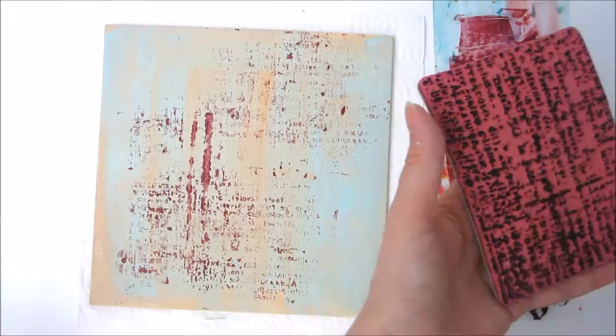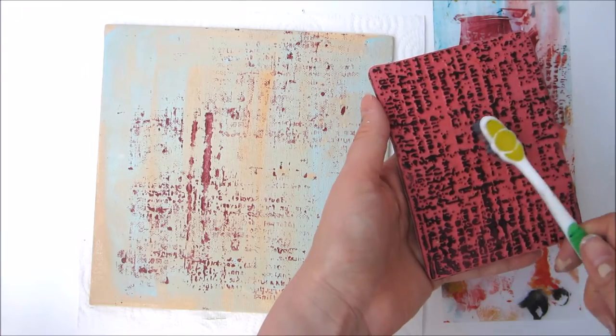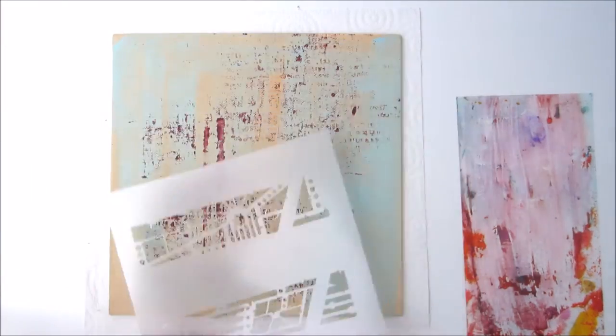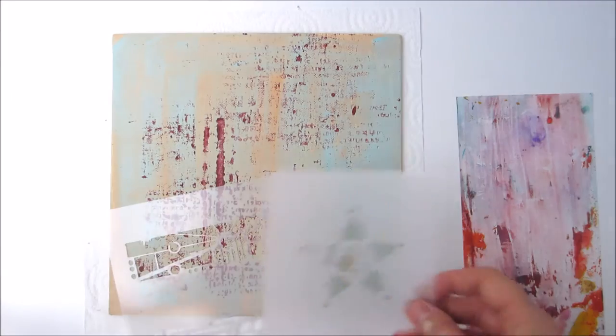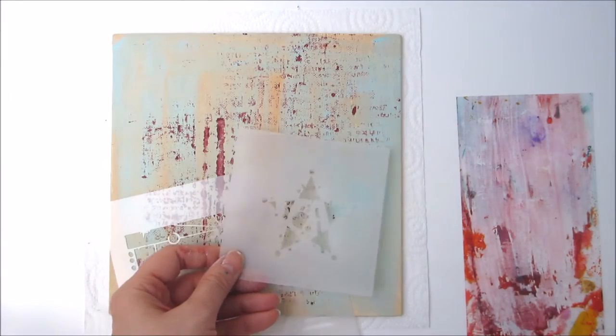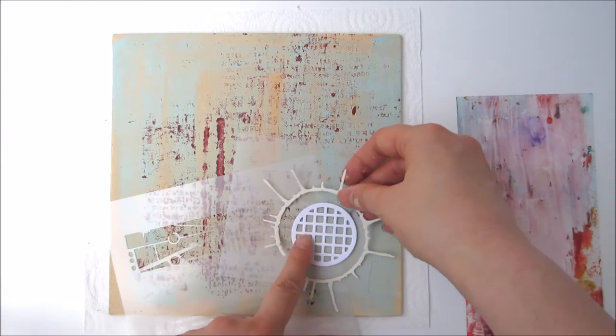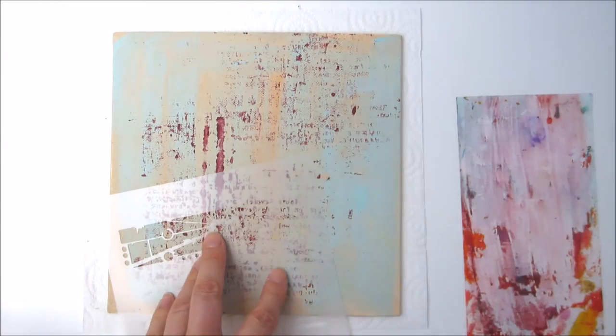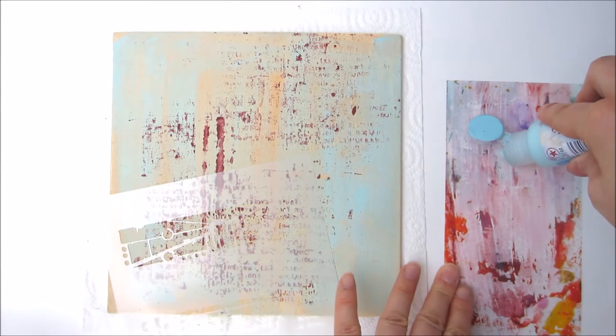Spray the stamp with some water then lightly scrub it with an old soft toothbrush to clean it. Next I'm going to add some texture using different stencils from Seth's StencilGirl range. At this point I'm just checking the placement of the elements to get an idea of how they will look in the finished project. Once I'm happy with my placement, I will start with the Urban Bar stencil.